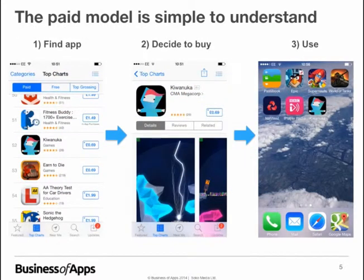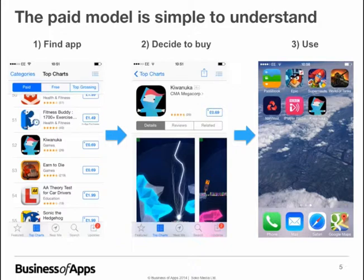The paid model is simple to understand. Compared to the free model, for both the developer and the consumer it's really straightforward. For example, you go into the app store, find an app like Kami by CMA Megacorp in the search listings or charts, decide to buy it, it goes onto your home screen, and you can use it and keep it forever. You pay 69p for it as a consumer — and it makes selling what you're offering much simpler.